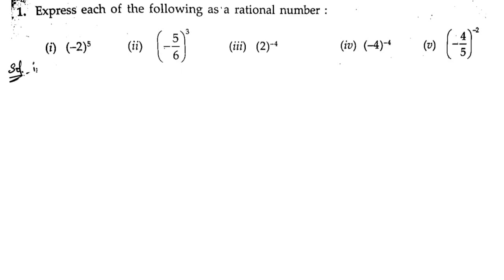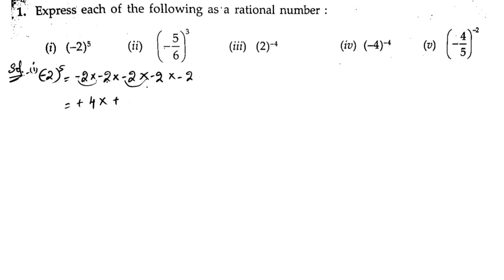It is minus 2 to the power of 5. So 2 to the power of 5 means we are going to multiply it 5 times: minus 2 into minus 2 into minus 2 into minus 2 into minus 2. Minus into minus is plus, 2 twos are 4; next into minus into minus is plus, 2 twos are 4; into minus 2, plus into plus is plus, 4 fours are 16; into minus 2, plus into minus is minus, 16 twos are 32. So the answer is minus 32.